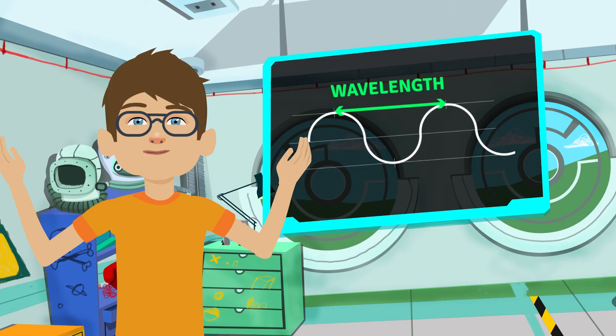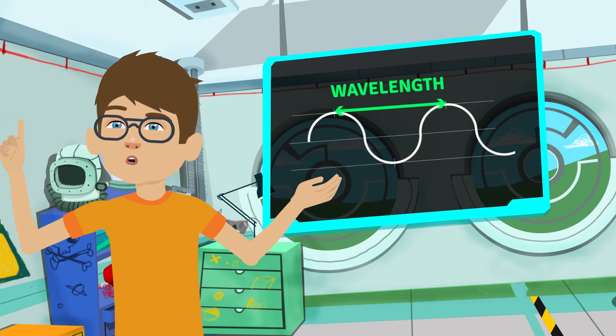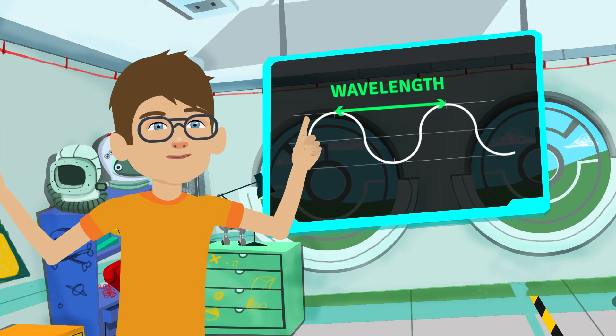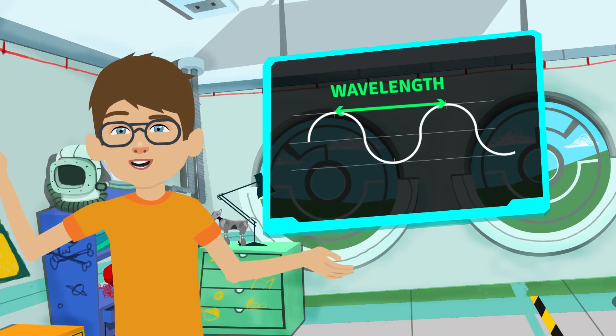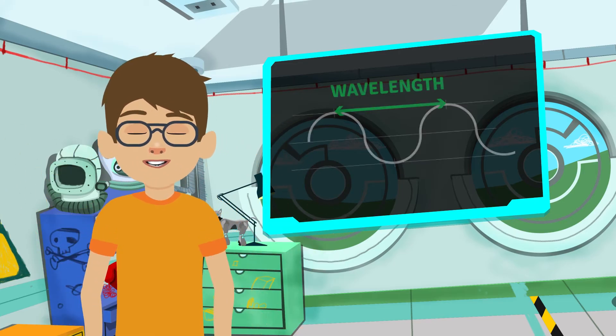The wavelength of a wave is the distance between a point on one wave and the same point on the next wave. It's usually measured from crest to crest, or trough to trough. Super easy!